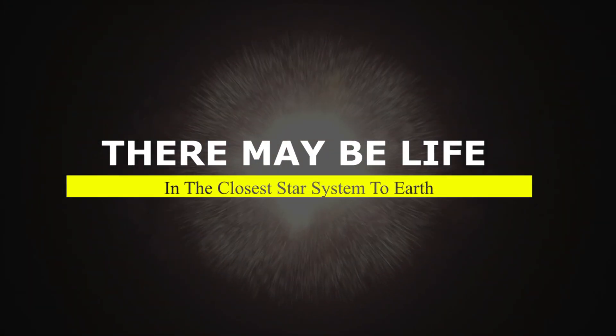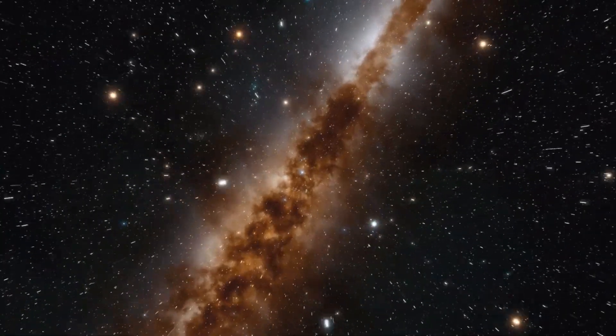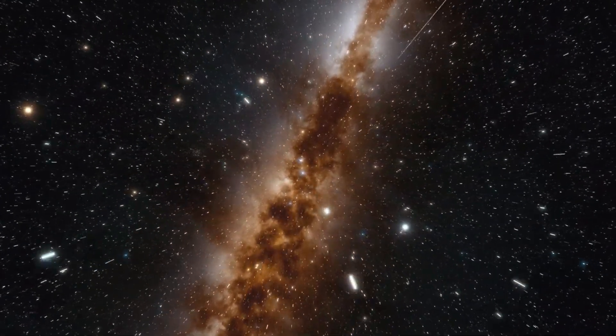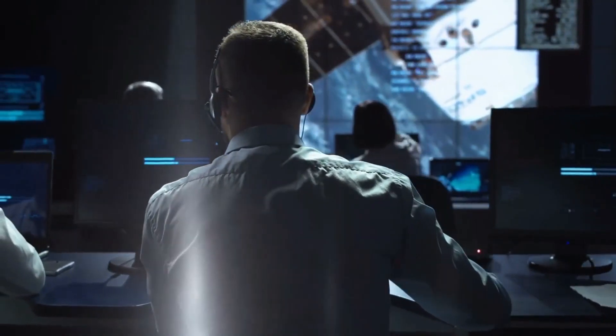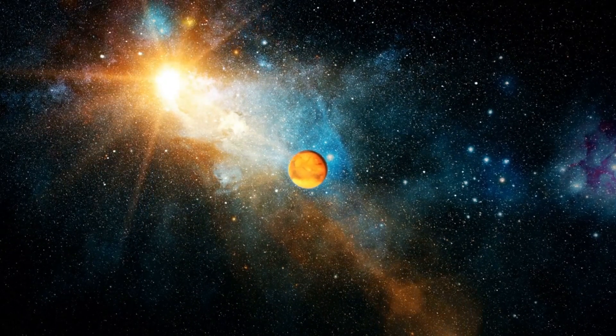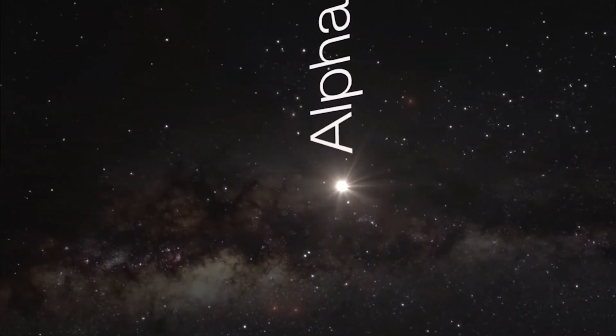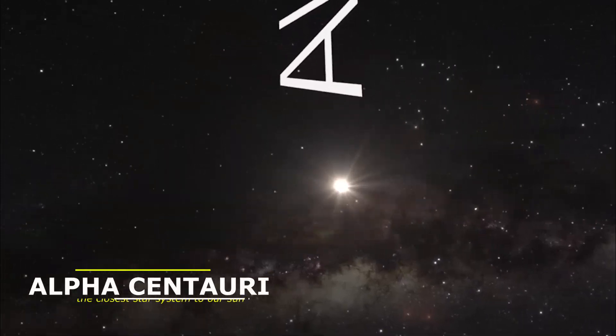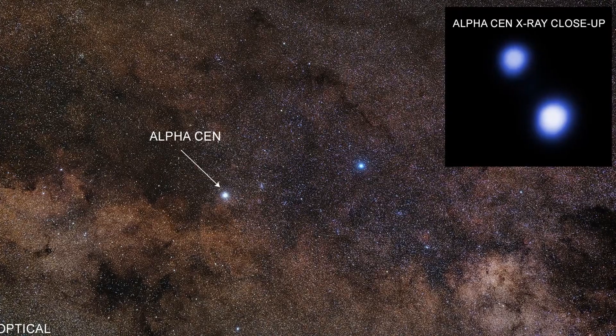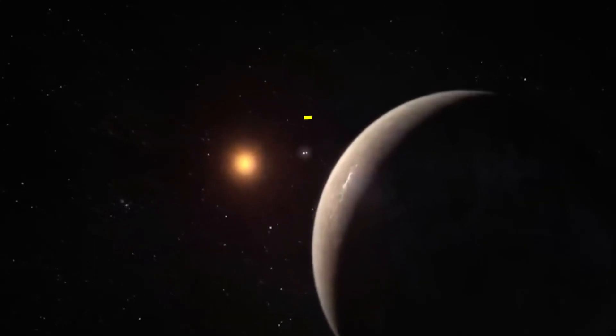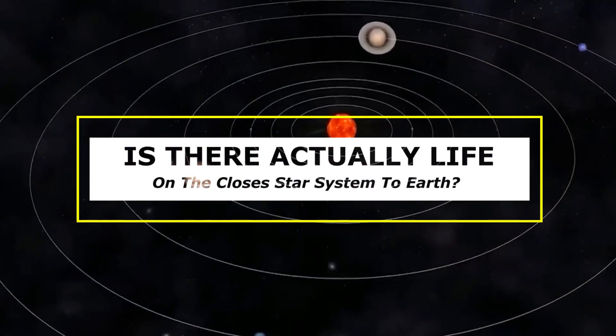There may be life in the closest star system to Earth. With the discovery of thousands of exoplanets orbiting other stars, the search for life elsewhere has entered an exciting new phase. So far, most of these worlds have been found many light years away. But what about closer stars? Including, of course, Alpha Centauri, the closest star system to our Sun, only just over four light years away. Is there actually life on the closest star system to Earth? Let's find out.